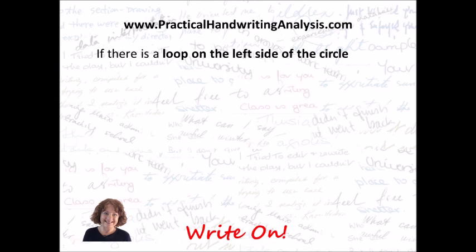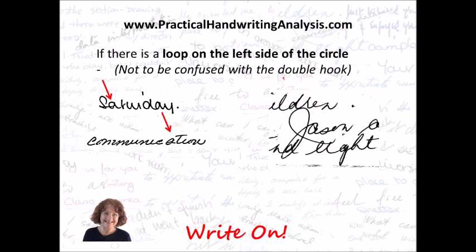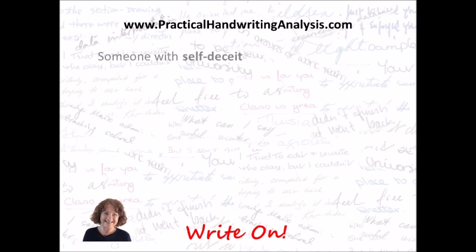If there's a loop on the left side of the circle — not to be confused with the double hook — you can see a loop on the left on Saturday, one in the A, one in the D, and one in each of the A's there. Here's a double hook just to show you the difference: that one forms a hook, the other ones are just a loop.